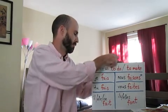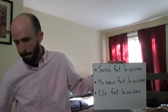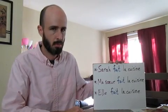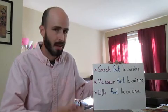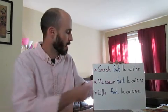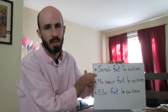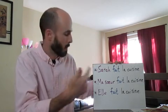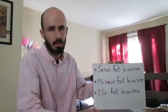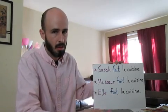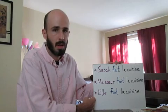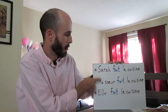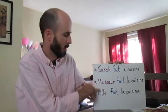I'll give you some examples. For example, I have a sister named Sarah who cooks. I can refer to her, I can name her by name. Sarah fait la cuisine. And I told you she's my sister, so I can also say ma sœur fait la cuisine. Or I can just use a pronoun, elle fait la cuisine. Three ways to say the same thing. The point is, use the same form of the verb.